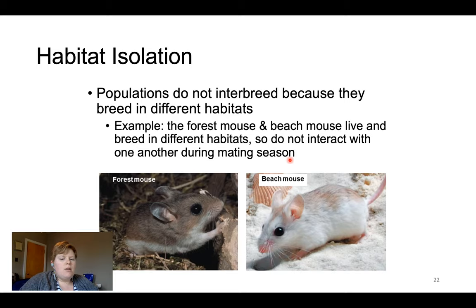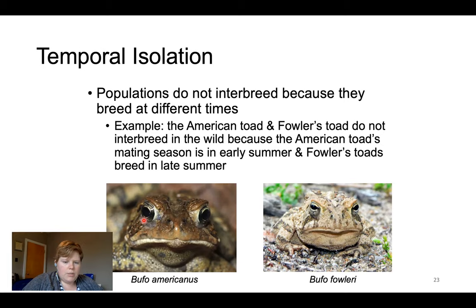Temporal isolation means isolation in time. Looking at these two toad species: Bufo americanus, the American toad, and Fowler's toad — they don't breed in the wild even though they may look very similar, because their breeding seasons don't overlap. American toads breed in late May and early June, then stop. Meanwhile, Fowler's toads show up in late July and early August. These two toads are not going to interact — they're separated by time. That's temporal isolation.